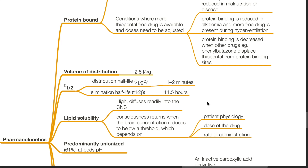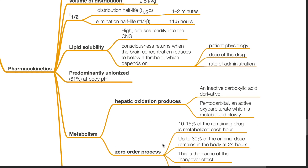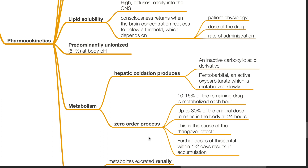Thiopenthal is highly lipid soluble and diffuses readily into the central nervous system. Consciousness returns when the brain concentration reduces to below a threshold which depends on the patient's physiology, dose of the drug and rate of administration. Thiopenthal is predominantly unionized — 61% at body pH. Metabolism of thiopenthal: it is metabolized by hepatic oxidation which produces an inactive carboxylic acid derivative and pentobarbital, which is an active oxybarbiturate metabolized slowly. The metabolism follows a zero-order process where 10 to 15% of the remaining drug is metabolized each hour.